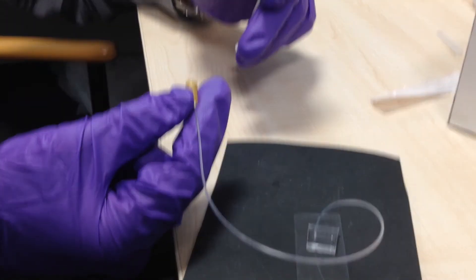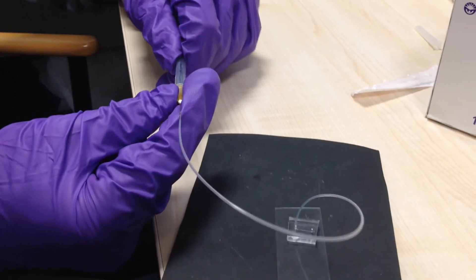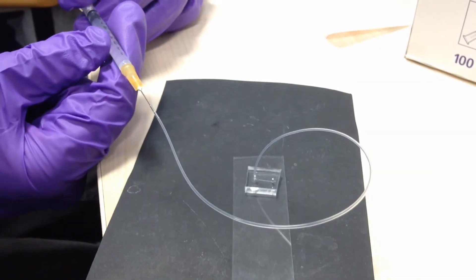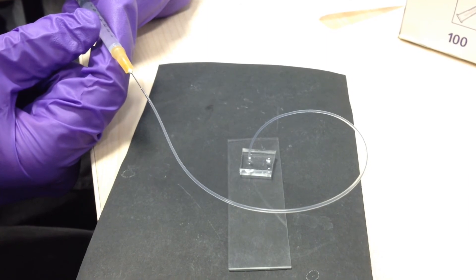And then to introduce some fluids to the device, this is just distilled water. Take a syringe, put it onto the needle tip, then gently push through. The tubing fills, then you can see water is starting to come out the other end of the microfluidic channel.